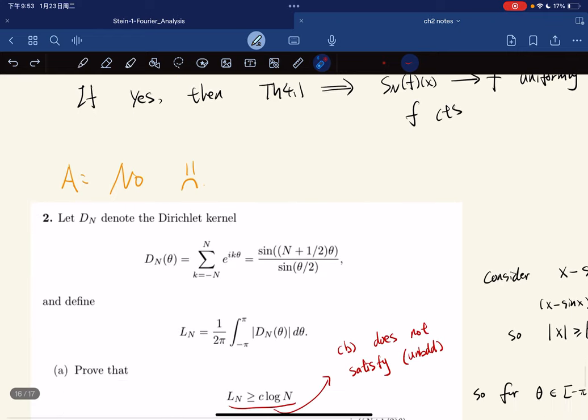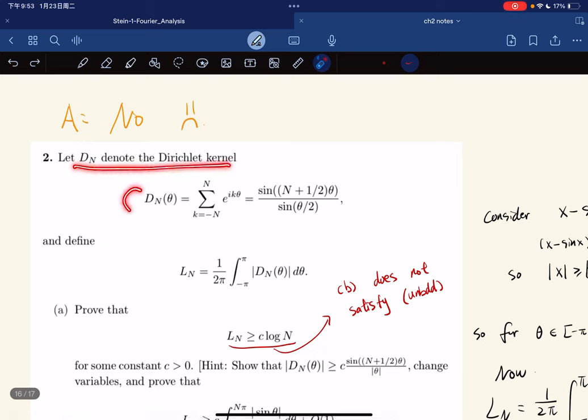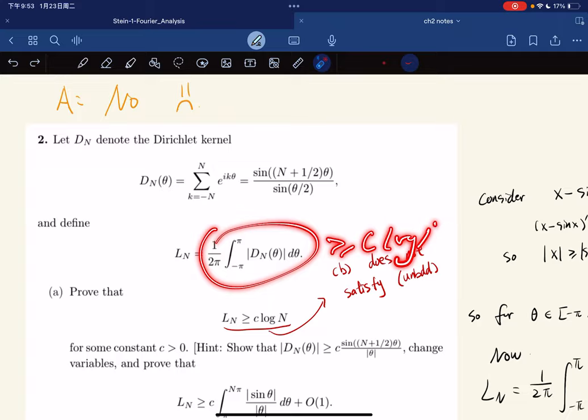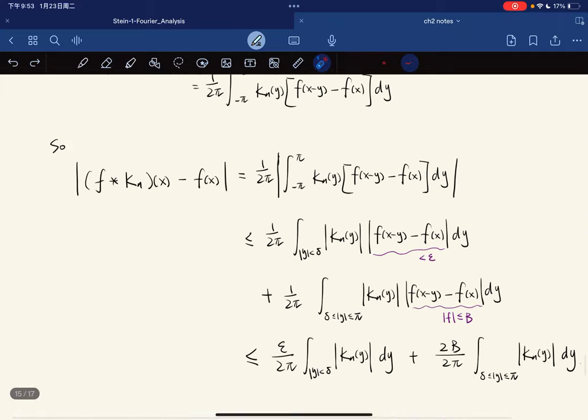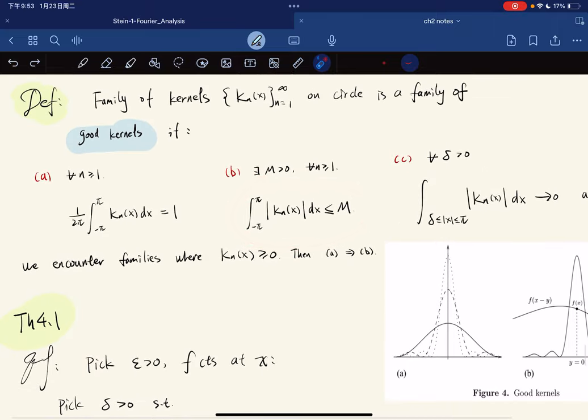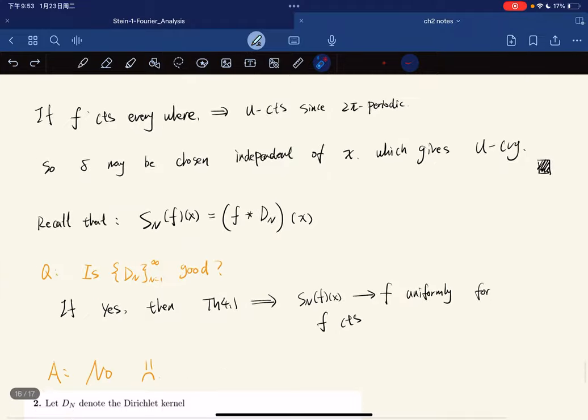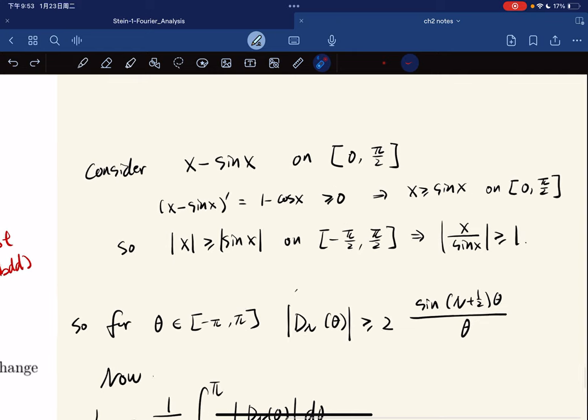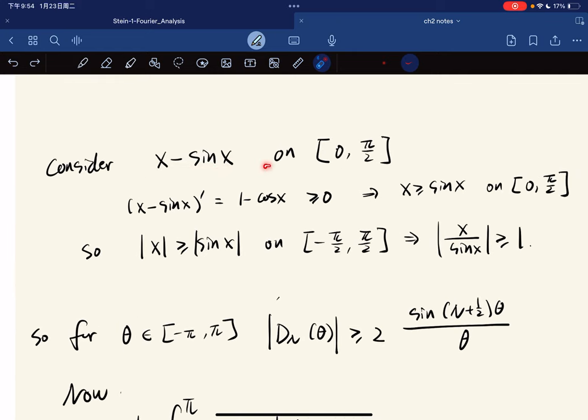Here's the exercise from the book. Let Dn denote the Dirichlet kernel and define Ln to be this. We prove this is greater than c log n. For this, we know that property B does not hold because this is unbounded. We need them to be bounded in order to be a good kernel.